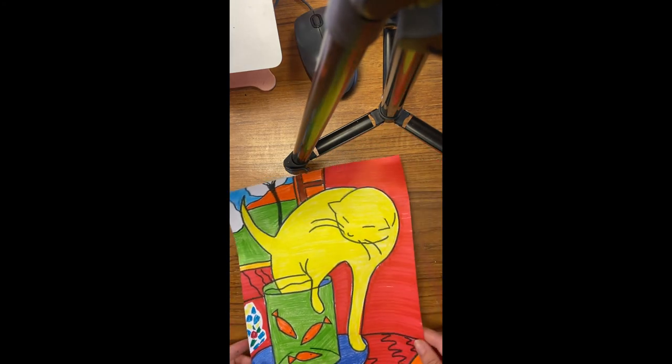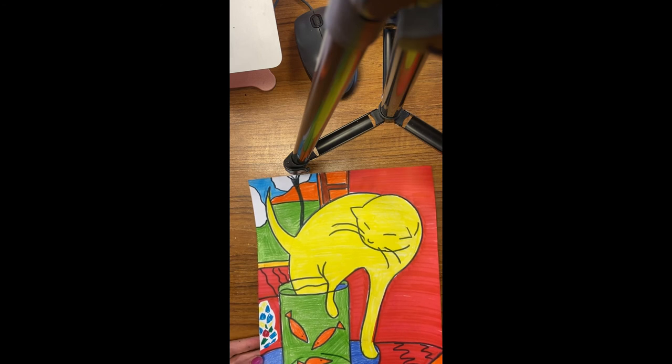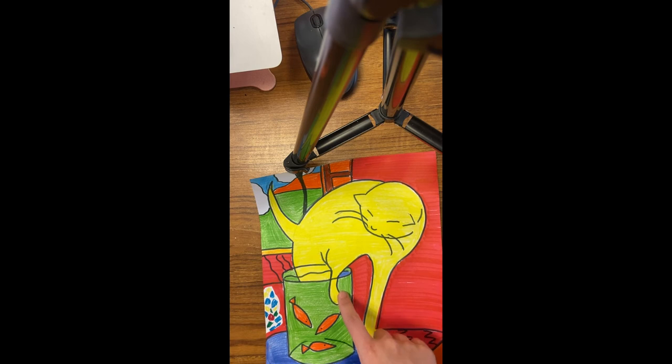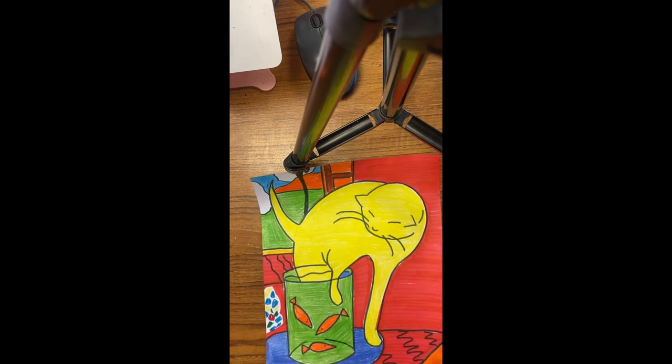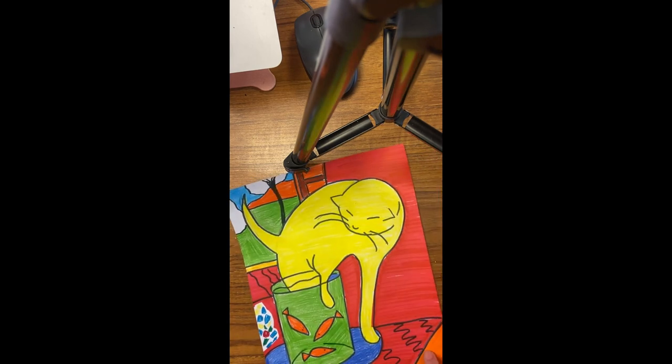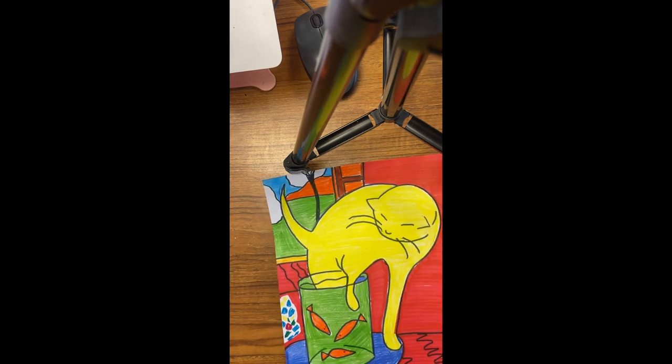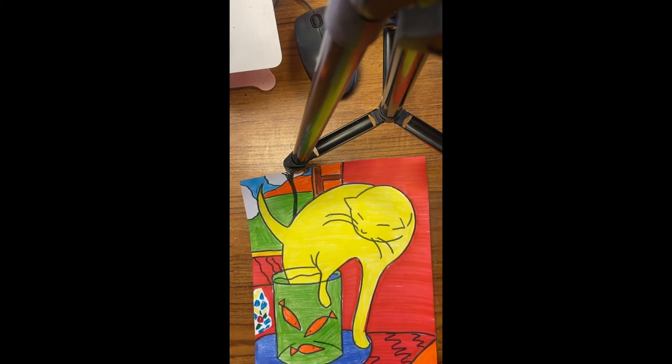This is the finished product of Matisse's artwork, Cat with Red Fish. We can see a lot of bold colors, complementary colors being used. We can see a lot of patterns being used. And the line work we see inside of our artwork is very thin, yet it brings a lot of attention to the artwork itself.